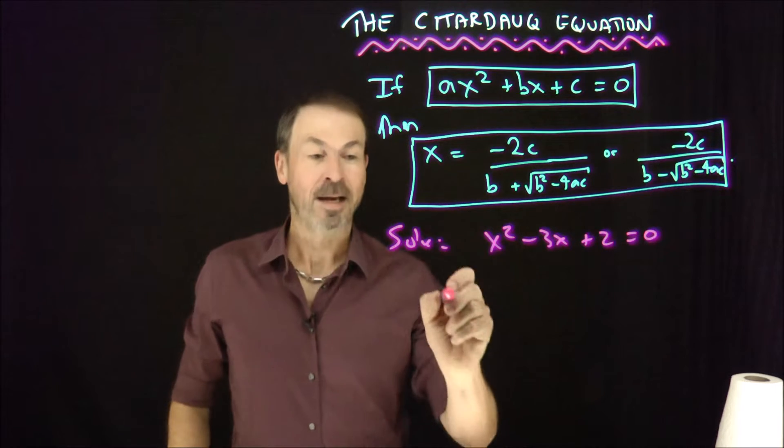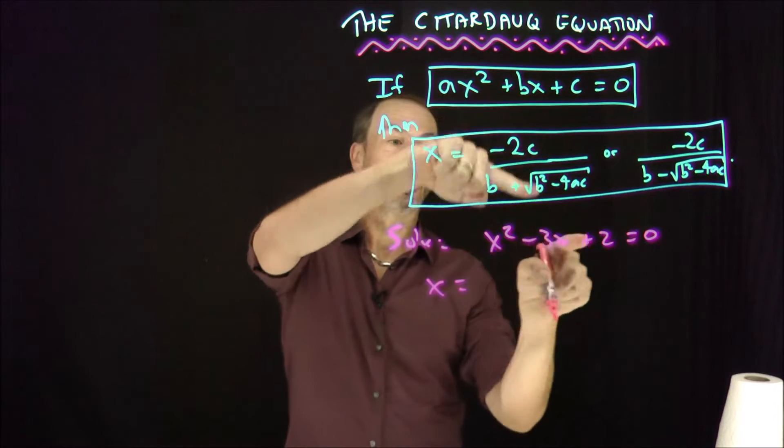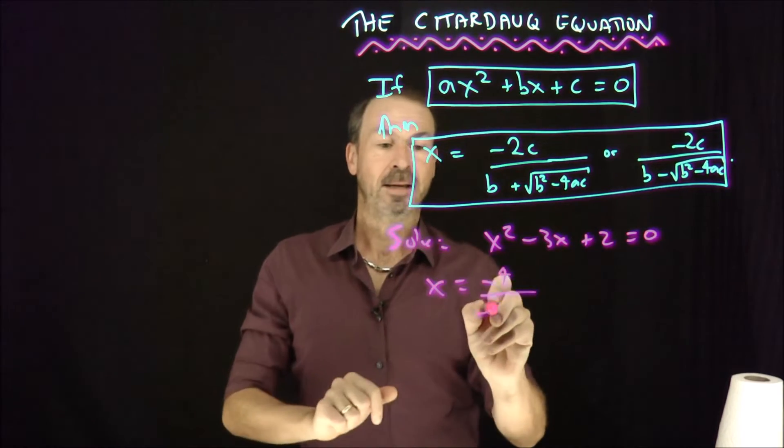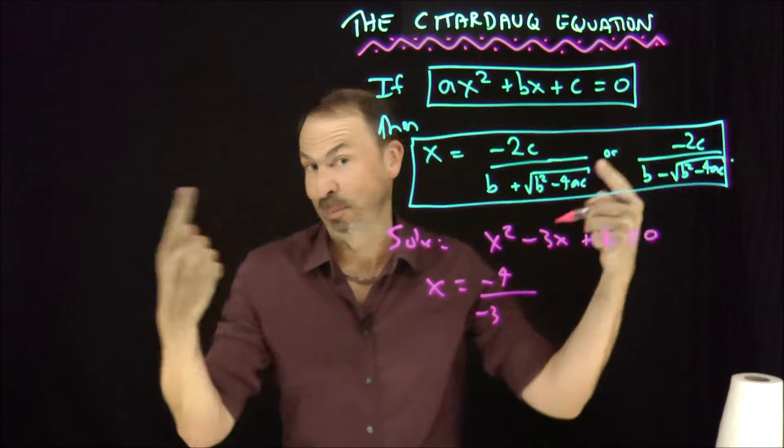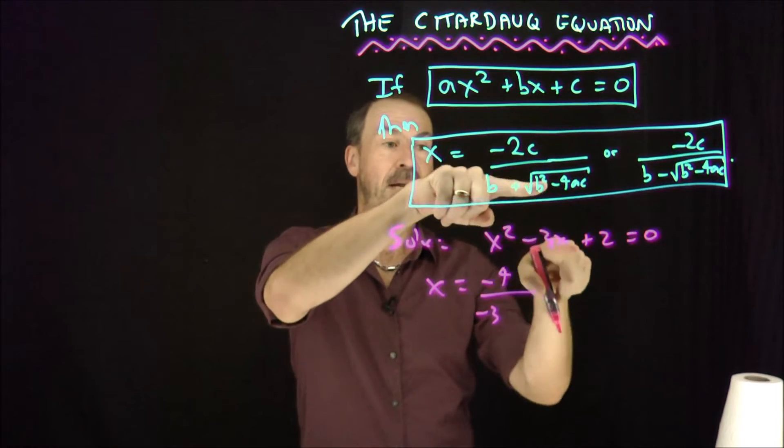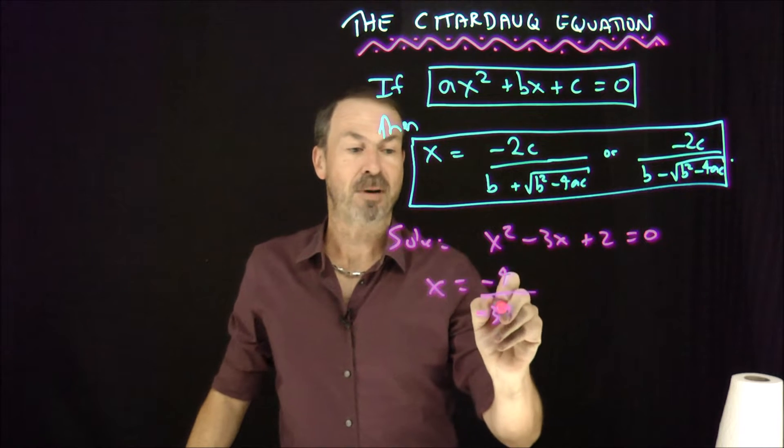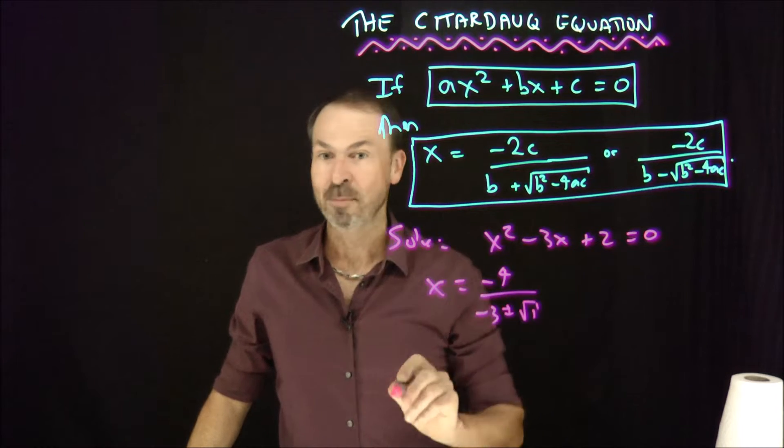Then according to the Ceta-Dorc formula, x would have to be -2c, which is -4, over b, which is -3, plus or minus b² (9) minus 4ac (8), so plus or minus the square root of 1, which is 1.